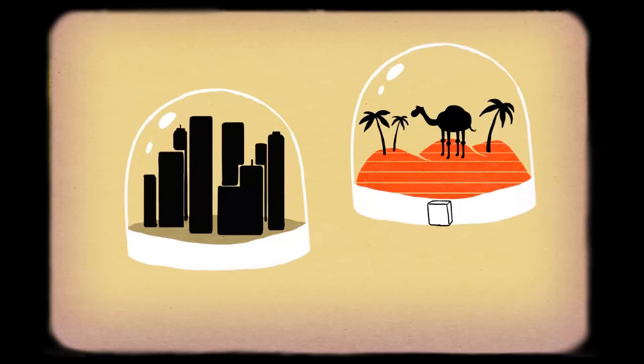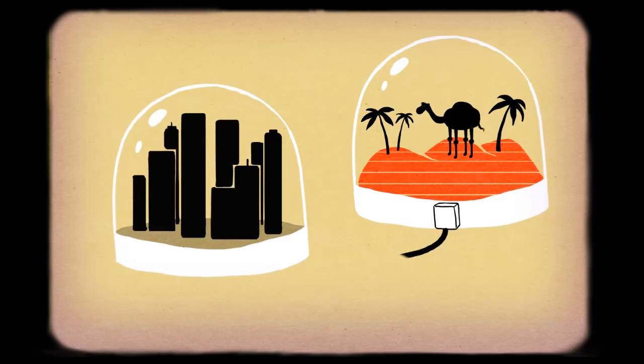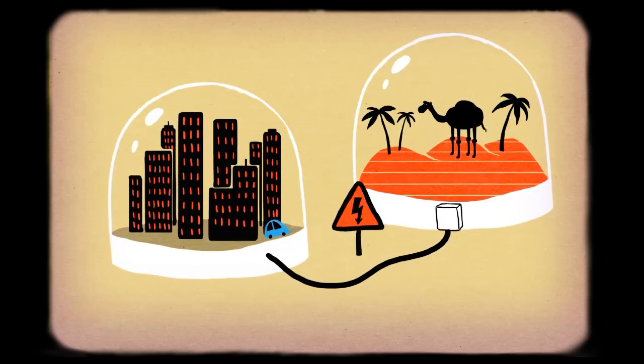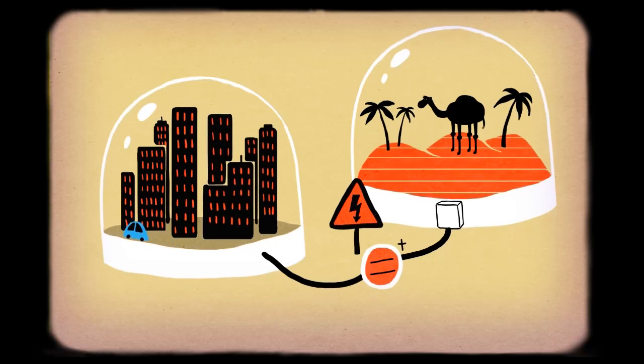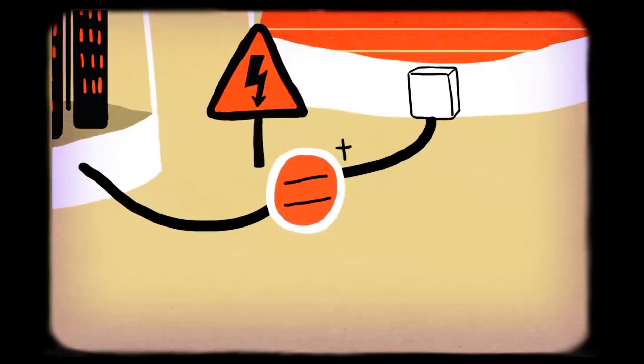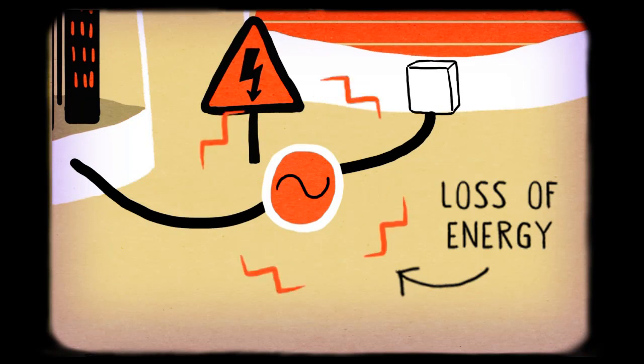How do you bring the electricity from the deserts to the people? Nowadays it's very simple. You just need a cable. You need high voltage and you need DC current. Normally our electricity network is AC, alternating current.